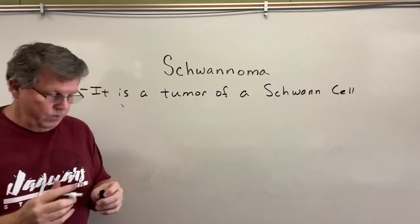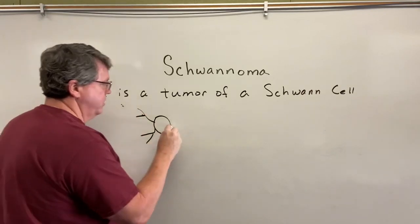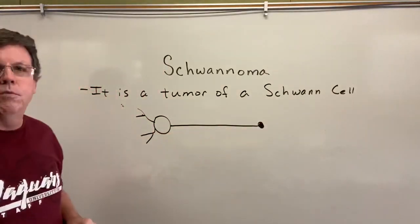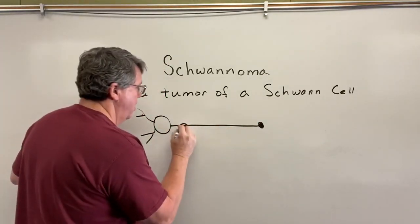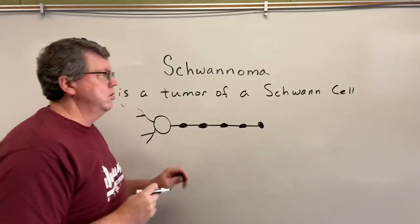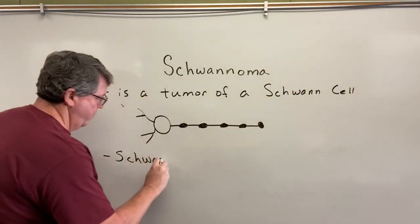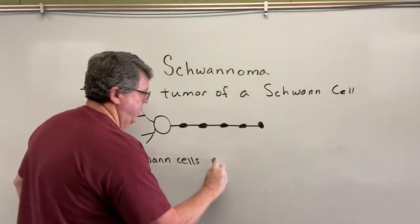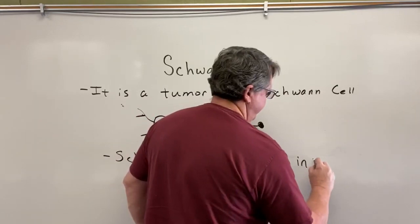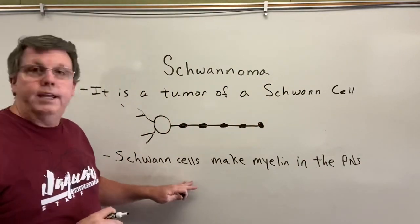So what are schwann cells? If we look at a nerve — I'm just going to draw a generic nerve here with an axon and axon terminal — what we have on the nerve is myelin. Schwann cells make myelin in the PNS, in the peripheral nervous system. So schwann cells are going to make myelin in the peripheral nervous system.